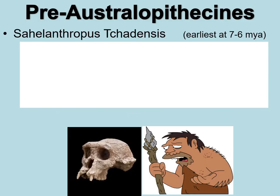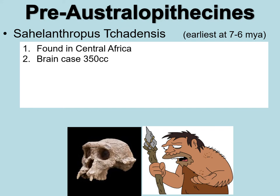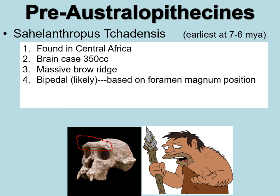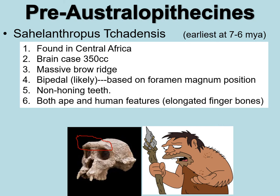Looking at our pre-Australopithecines, we have Sahelanthropus chadensis — the earliest at 7 to 6 million years ago — found in the central African country of Chad. Brain case size was around 350 cc's, with a massive brow ridge called the superorbital torus. Bipedalism is likely based on the foramen magnum position. It had non-honing canines, confirming it's a hominin, and had both ape and human features — elongated finger bones like an ape, but skull features similar to Ardipithecuses and Australopithecines.